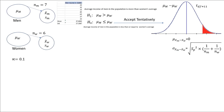We take a sample from the first population — seven numbers in the sample, with a mean of 37 and a standard deviation of 17.2047. Then we take a sample from the population of women — six people in our sample, with an average of $24,000 and a standard deviation of 6.1644.